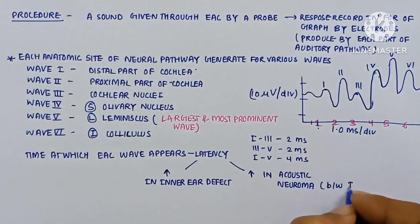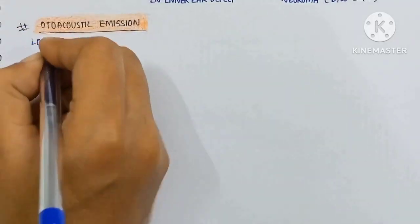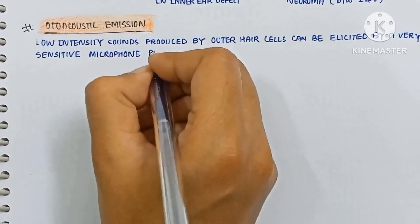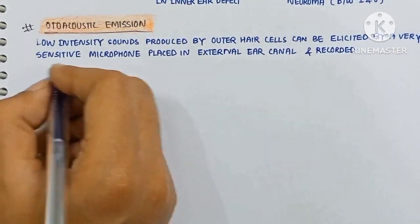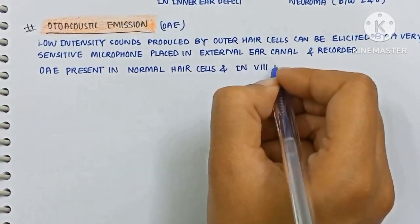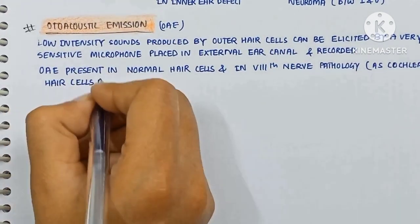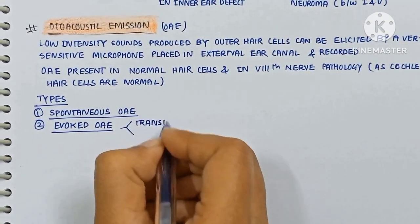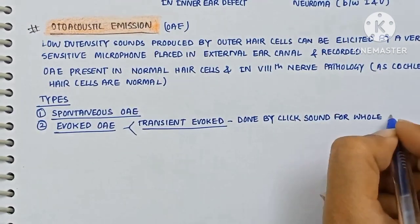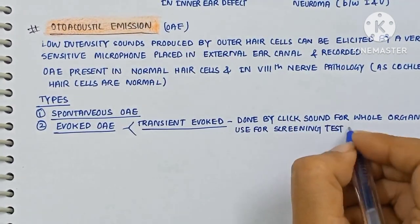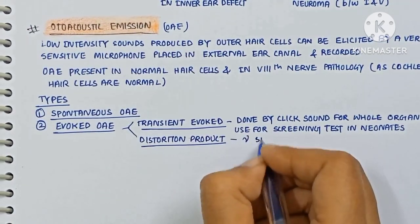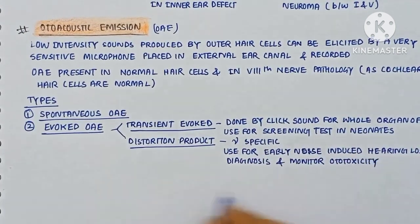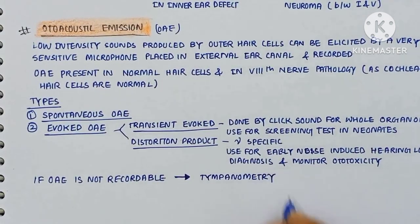Otoacoustic emissions (OAE): low intensity sounds produced by outer hair cells can be elicited by a sensitive microphone placed in the external ear canal and recorded. OAE is present when hair cells and the eighth nerve pathway are normal. Types: first is spontaneous OAE, and second is evoked OAE — transient evoked OAE done by click sound for the whole organ of Corti, used for screening in neonates; and distortion product OAE, which is frequency-specific, used for early noise-induced hearing loss detection and monitoring ototoxicity. If OAE is not recordable, tympanometry is done.